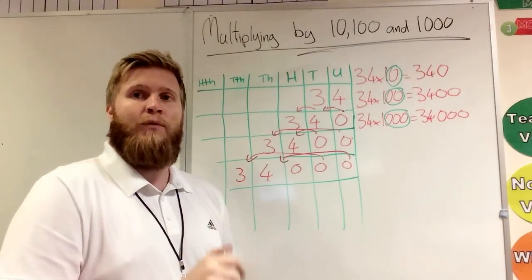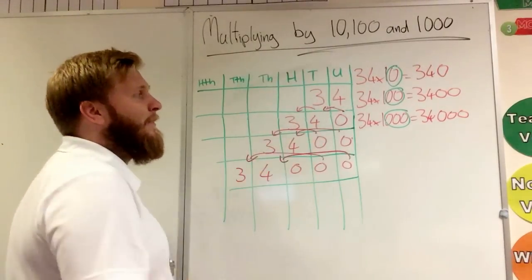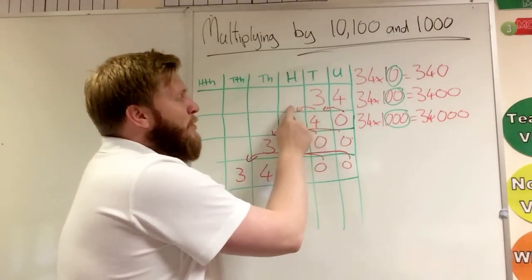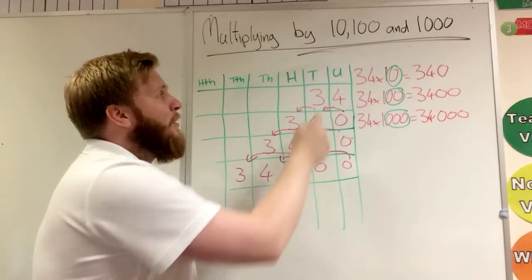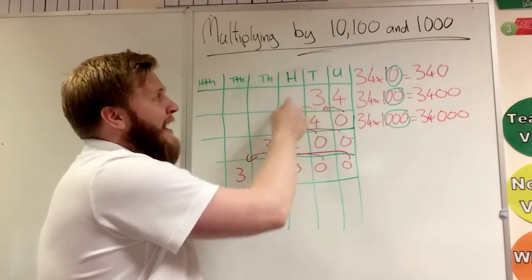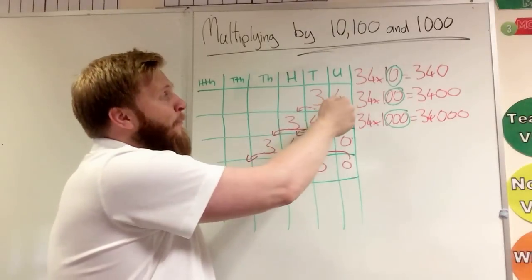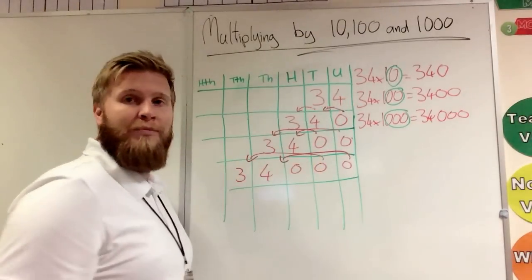Now I'm going to show you what you're actually doing. You're not actually just adding a zero. What you're doing is you're moving your numbers to the left, up one in place value. So three tens gets ten times bigger and becomes a hundred. Four units becomes ten times bigger and becomes tens.